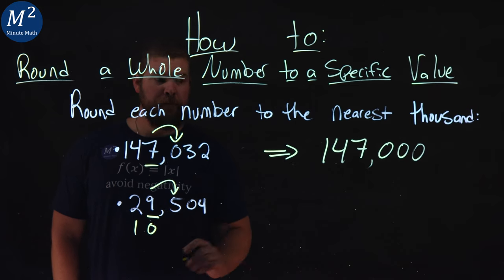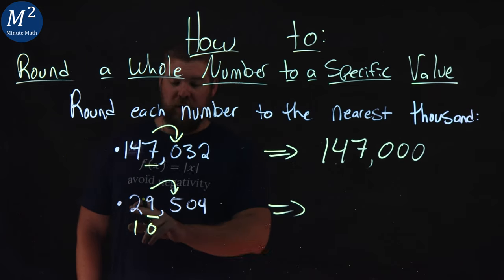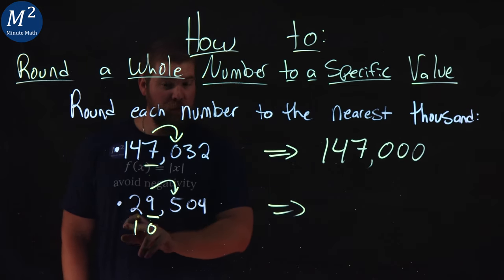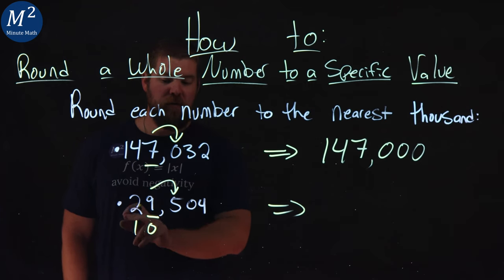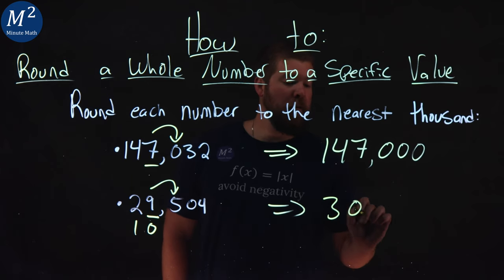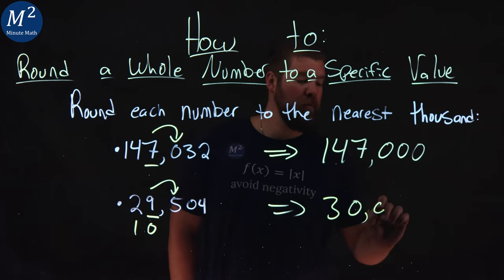So we have a 1,0 here. So to round this over, the 2 actually turns into a 3 because we added 1 to the 9, which gives us that 10 here. So 2 and 1 is a 3. And then we have a 0 where the 9 is, and 0 is the rest of the way.